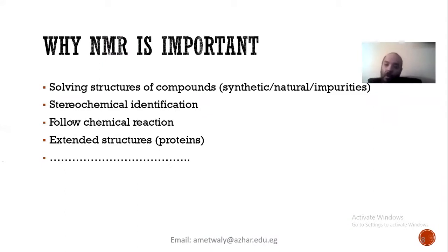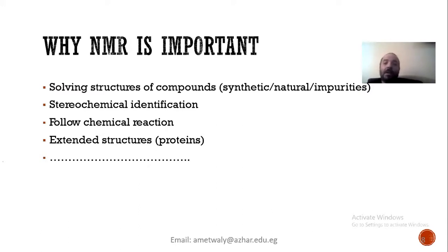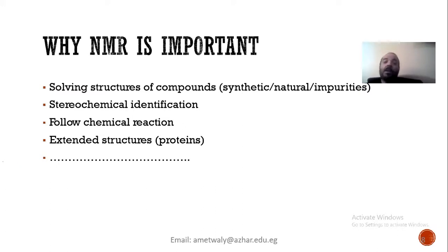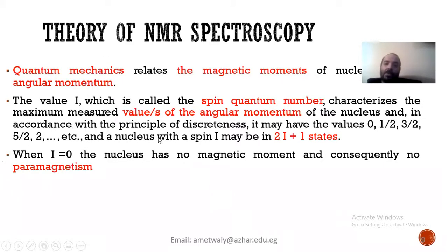Is NMR important? Yes, of course. NMR can help us solve structures — whether I isolated a pure compound or synthesized a structure. It tells me if my compound is pure or contains impurities. NMR is also very important for stereochemical identification — if I isolate a new compound with a chiral center, I can confirm whether the configuration is R or S. It is also useful for following chemical reactions.